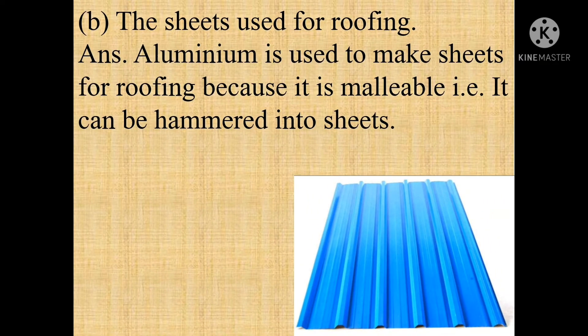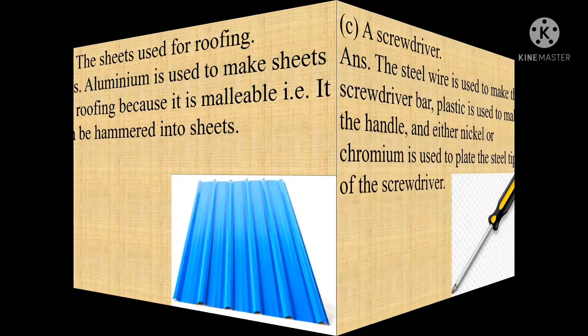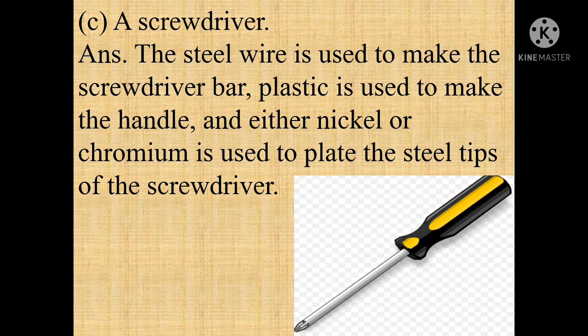B) The sheets used for roofing. Answer: Aluminum is used to make sheets for roofing because it is malleable, that is, it can be hammered into sheets. C) A screwdriver. Answer: Steel wire is used to make the screwdriver bar.